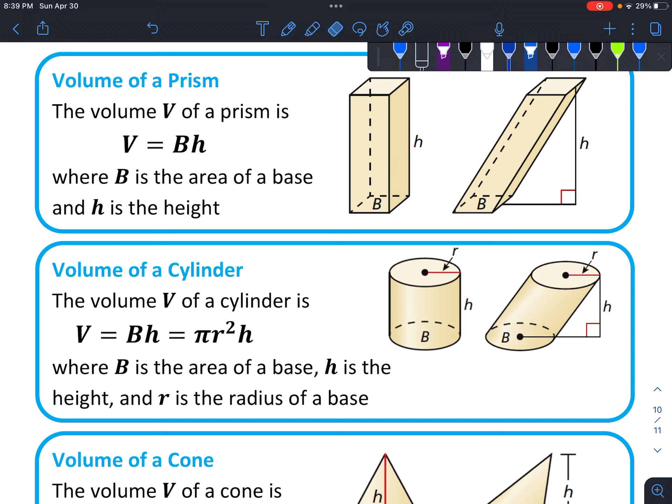Whatever the base of that type of shape is, then you'd multiply by the height. So if you're given these two sides here, length times width, you would go length times width times height.